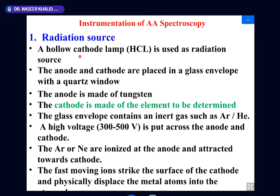The hollow cathode lamp is used as the radiation source. This is a special type of lamp — not an ordinary tungsten lamp as used in homes or offices. It is a different type: this is a hollow cathode lamp.